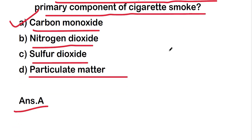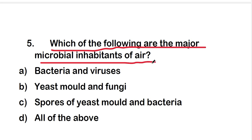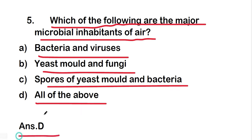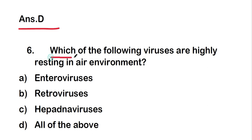Next question: which of the following are the major microbial inhabitants of air? The options are bacteria and viruses, yeast mold and fungi, spores of yeast mold and bacteria, or all of the above. The right answer is option D, all of the above. Bacteria, viruses, yeast, mold, fungi, and their spores are all major microbial inhabitants of air.